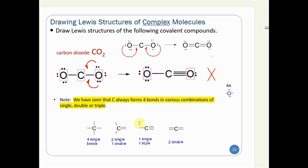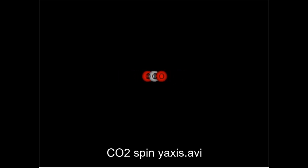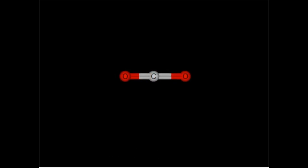In the three-dimensional model of carbon dioxide, we see carbon shares eight valence electrons through two double bonds. Both oxygens also have complete octets, though the non-bonded electron pairs aren't visible in the ball-and-stick model.